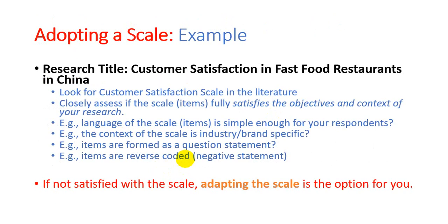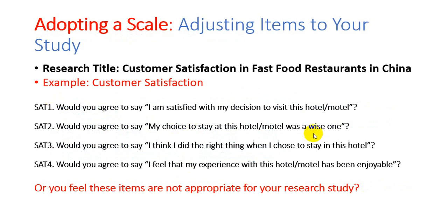To critically evaluate the scale, first consider the objective of the research and the operationalization. Another thing is the language of the scale — is it simple or sophisticated enough for your respondents? If you're okay with the language, the first concern is out. Next, consider whether the context of the scale is industry or brand specific. This scale was adopted from a service industry, specifically for hotel and motel customers, and our context is also a fast food restaurant — both are service environments — so the context is also acceptable.